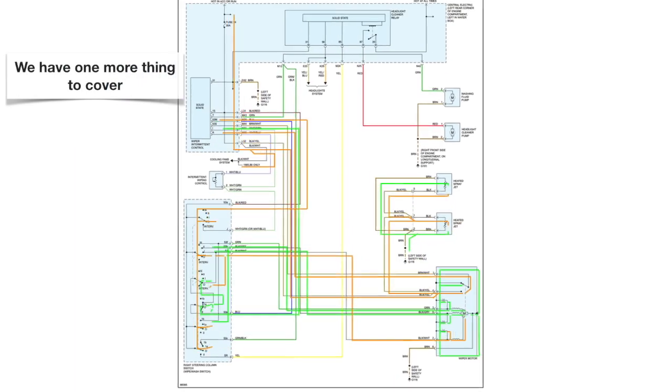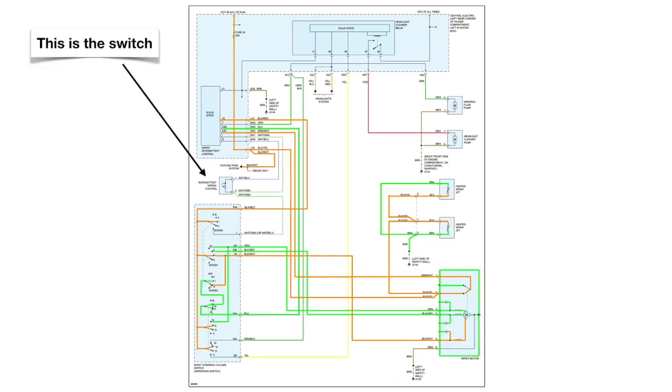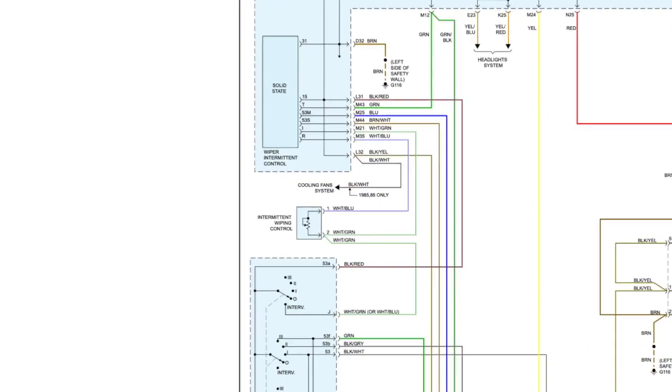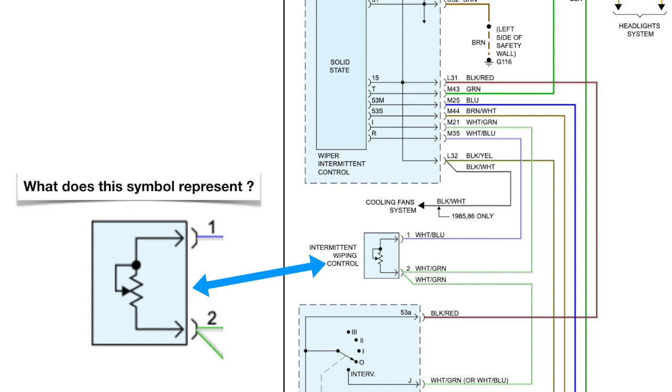We have one more thing to cover and that's the intermittent control. When we zoom in on that to get a better look at it, you can see the diagram and the symbol that represents it.